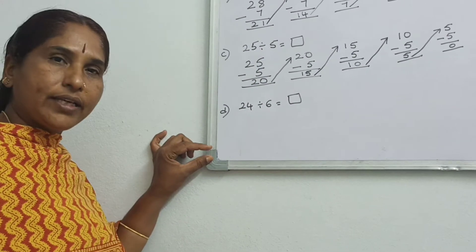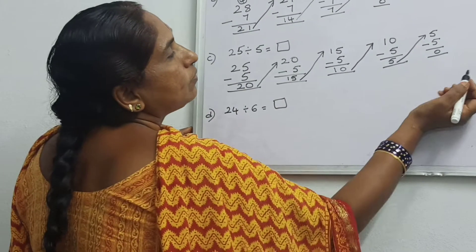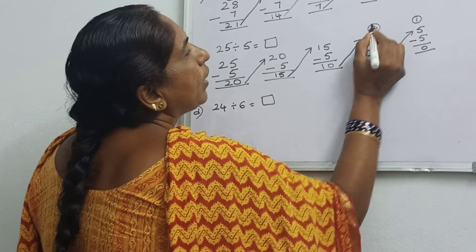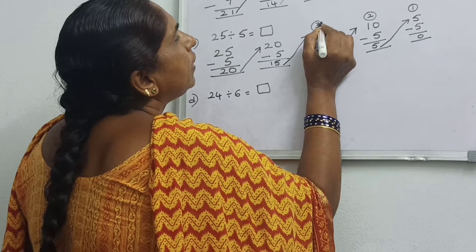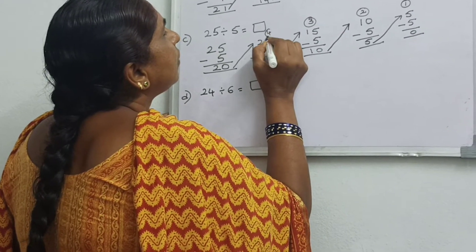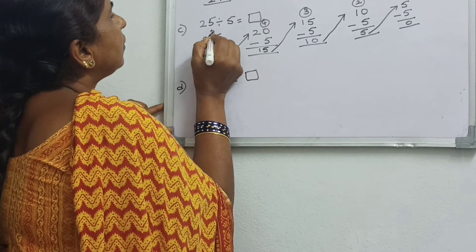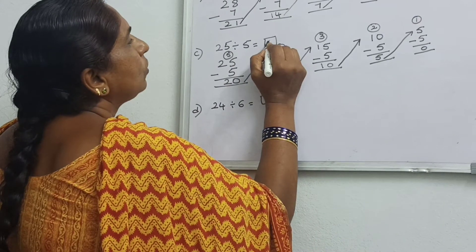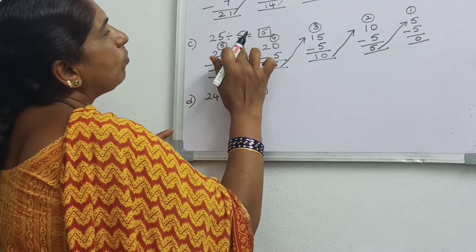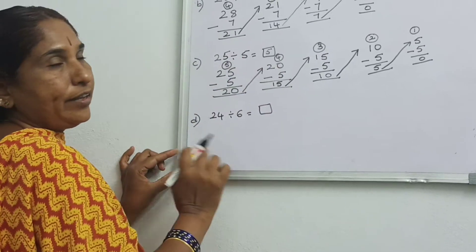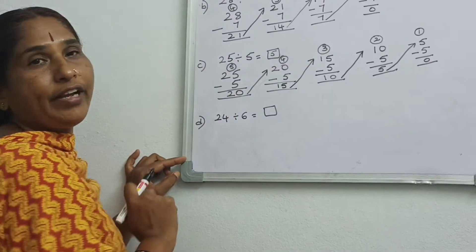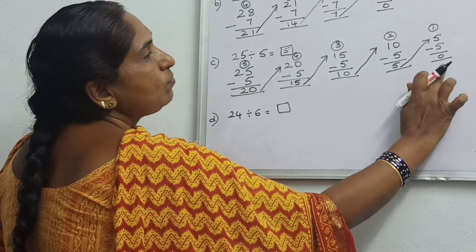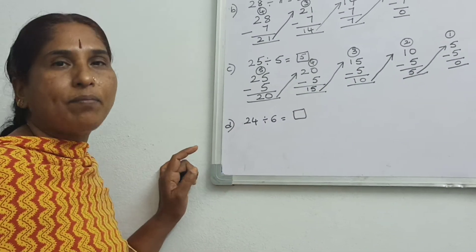Did you get 0? Yes. So now how many times did you subtract? 1 time, 2 times, 3 times, 4 times, 5 times. So 25 divided by 5 is equal to 5. Five 5s are 25. So 5 times you did repeated subtraction till you got 0.